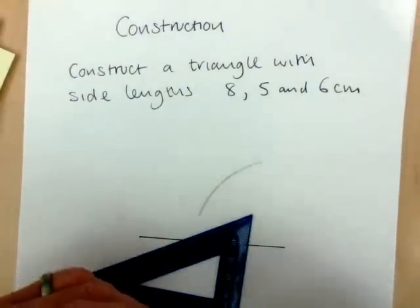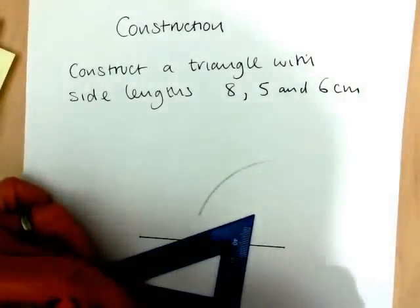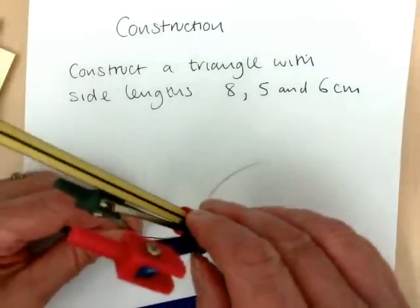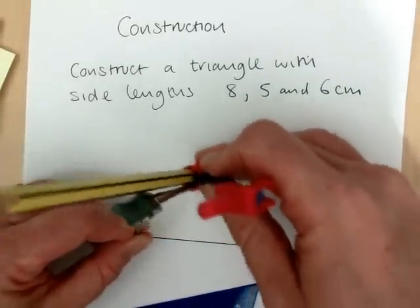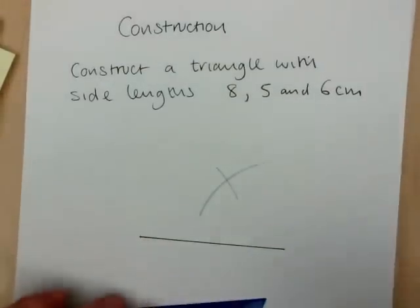But then, reset it to the third side, which is 6. So it's really quite straightforward. Set it to 6 and let it arc across. See that quite clearly.